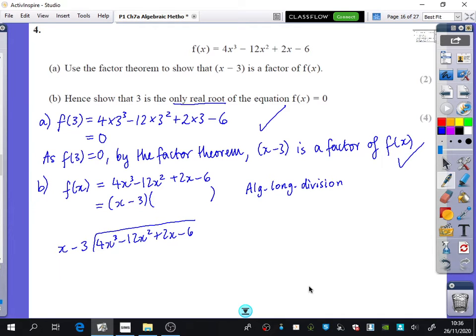So I'm going to do my 4x cubed minus 12x squared plus 2x minus 6 divided by x minus 3. There's not actually going to be a remainder because we know that x minus 3 is a factor. There is no remainder.